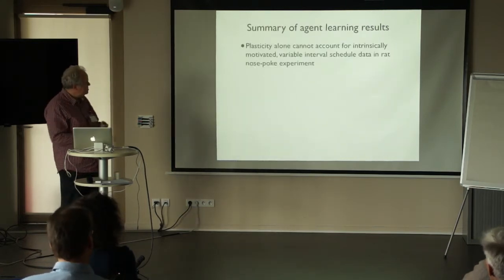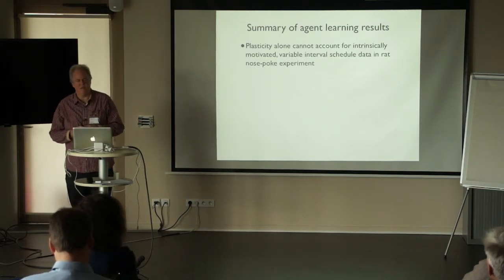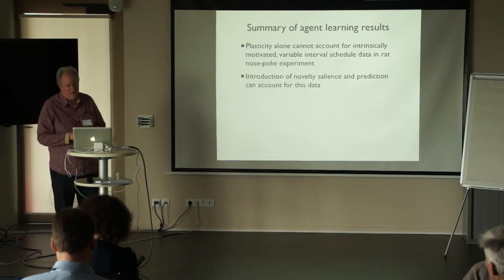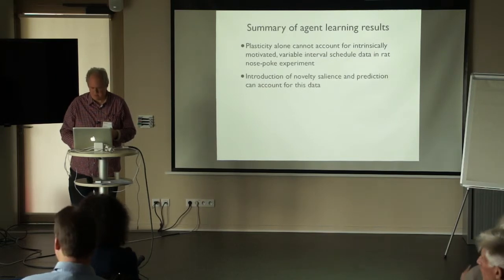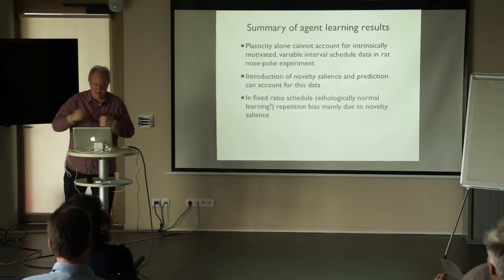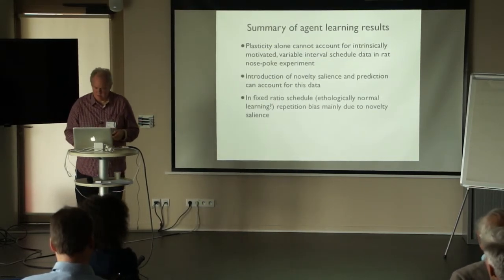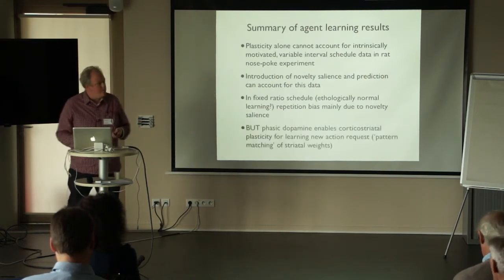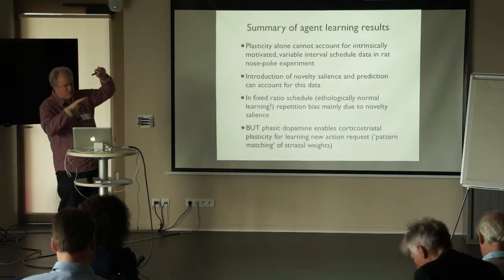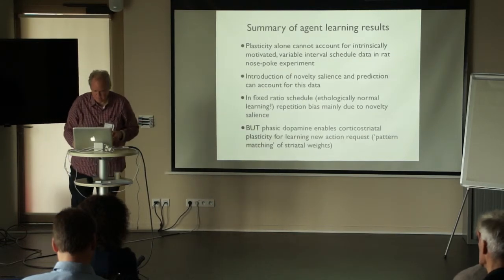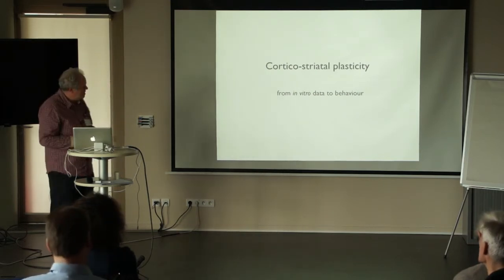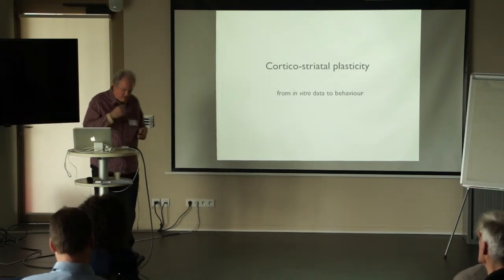In summary, the learning of this agent in the small robot was that we wanted plasticity to account for the data, but it couldn't account for the data in the rat nose-poke experiments. So we introduced this idea of novelty salience to help. In the fixed ratio schedule, which we think is the ethologically normal situation, this repeated bias to execute the action could be mainly due to novelty salience. But we still need phasic dopamine to enable learning of the plasticity required for the basal ganglia to sculpt its weights to listen to the cortical request. Given I've got ten minutes, I think I've got time for the other half of my talk, which I wasn't sure whether I would. So I've mentioned nothing at all so far about the learning rules.